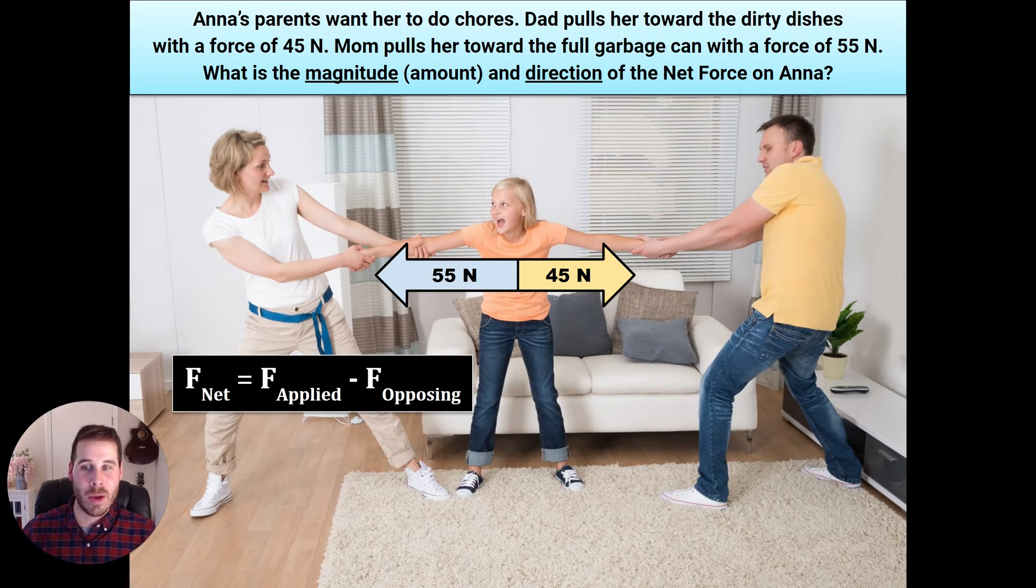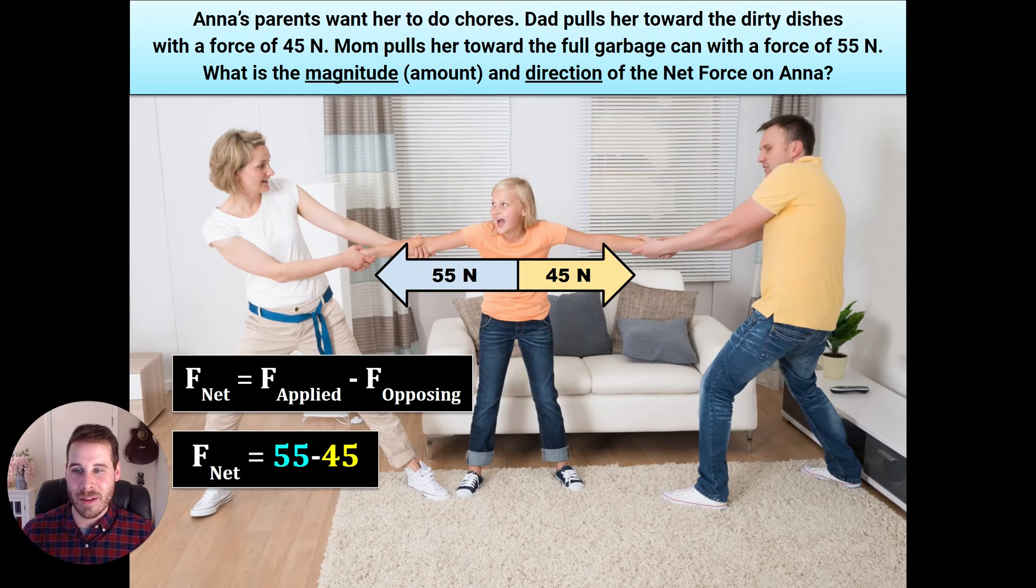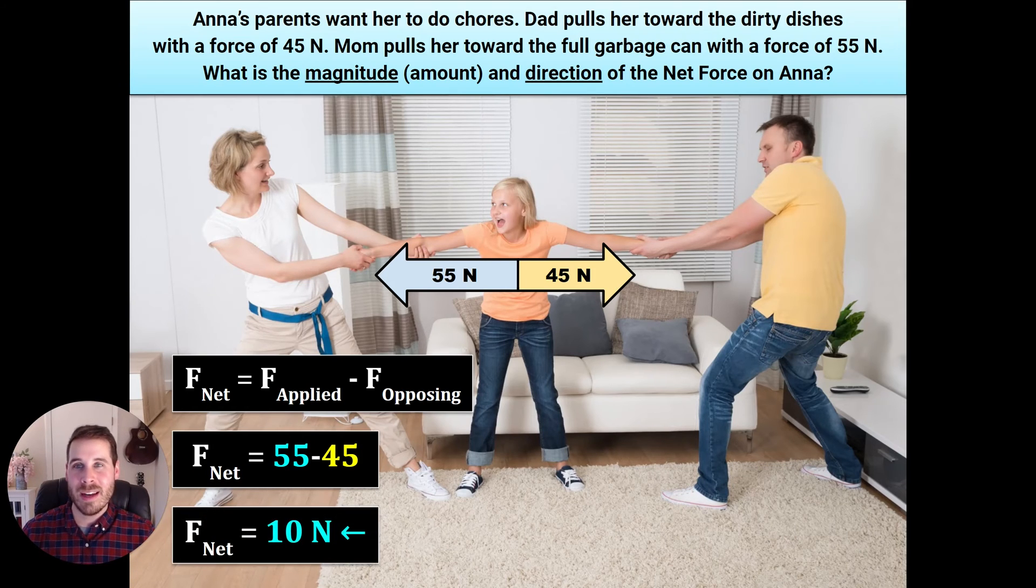Here's the force that dad is pulling with 45 newtons towards the right. Here's the force that mom is pulling with to the left. And here's our equation. The net force on Anna is going to be whatever the applied force is minus whatever the opposing force is. Now you can probably tell pretty clearly that mom is going to win. So let's just call her force the applied force, and we'll call dad the opposing force. Plugging in the numbers, we get 55 newtons minus 45 newtons equals 10 newtons. And the direction is going to be to the left because we established that mom's force as the winner is going to be the direction that the net force is traveling in.